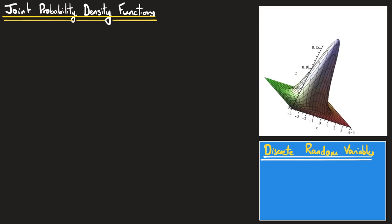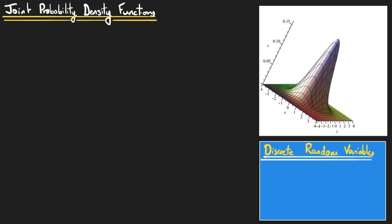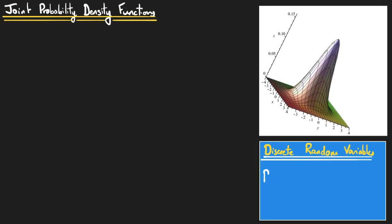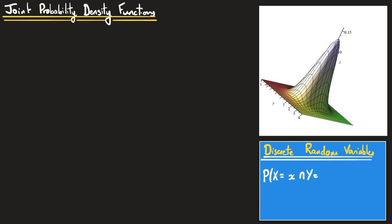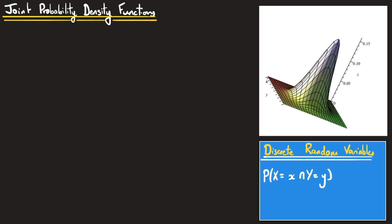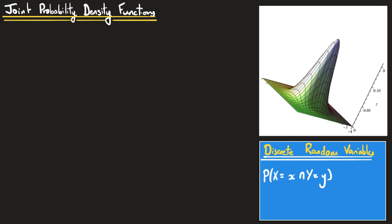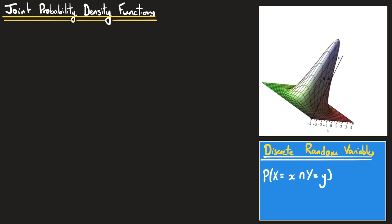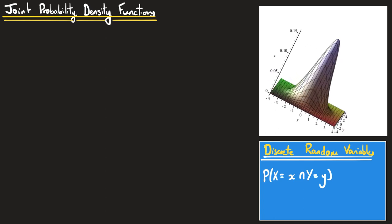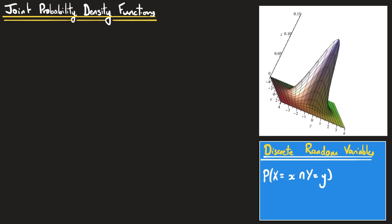Suppose we have two random variables x and y. When dealing with discrete random variables, we can write the joint probability as p(x = little x and y = little y). This probability distribution tells us about the probability of x and y taking on particular values. With continuous random variables, we cannot write this kind of probability simply because the probability of every single outcome is zero.